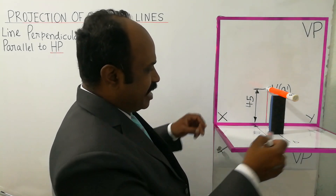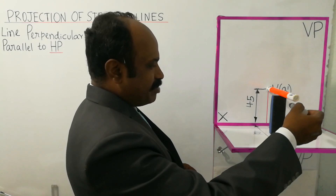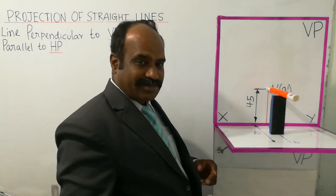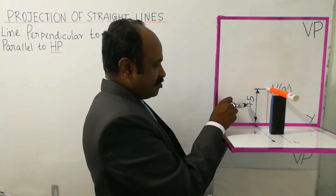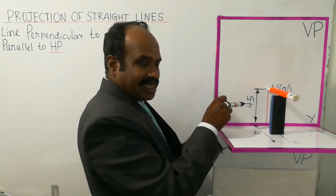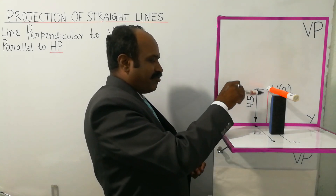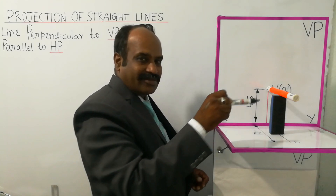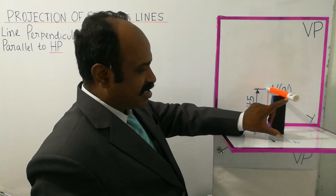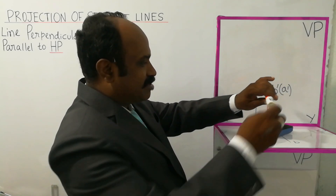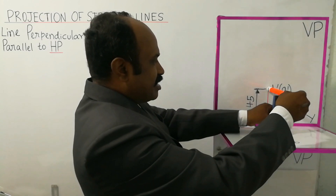The height above HP is 45mm. The distance above HP for both A and B is uniform at 45mm, since the line is parallel to HP. You can see the length of the line.